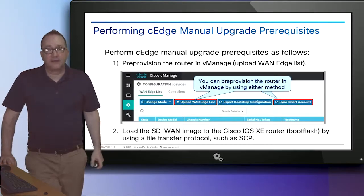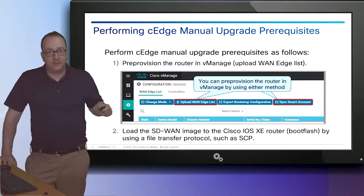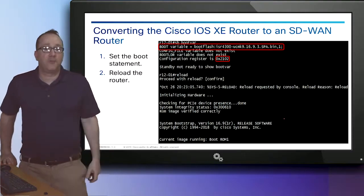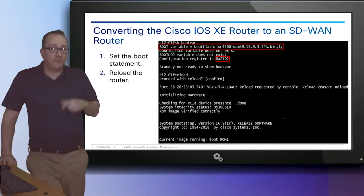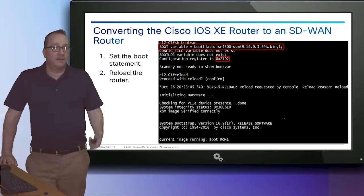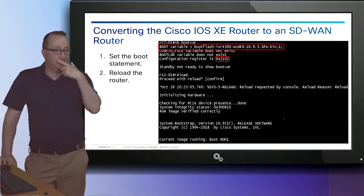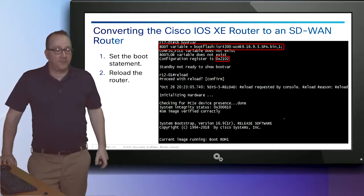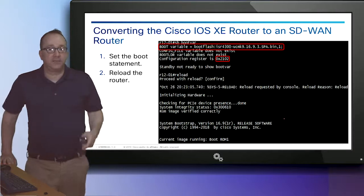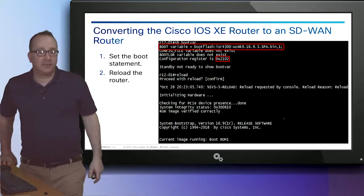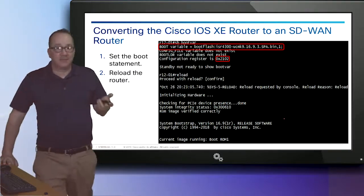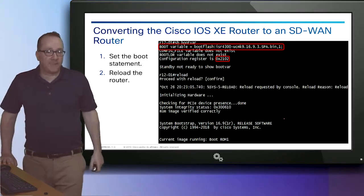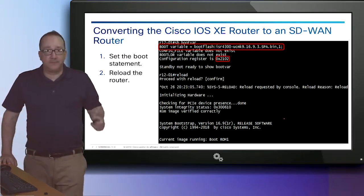I still favor TFTP because I'm really old. Once the file is in there, we're going to check the boot variable. We need to set a boot statement — boot system flash, et cetera — with the filename for the SD-WAN software. Make sure the config register allows booting off the software; it should be config-register 0x2102, just like any other fully operational Cisco router. Then reboot it.